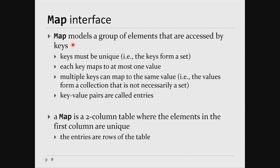A map models a group of elements accessed by keys. You can think of a list as a map where the keys are the integer indexes. A map generalizes a list in that the indexes are no longer integer numbers — in Java they can be any reference value. Keys must be unique: no two elements in a map have the same key. Every key maps to exactly one value, but multiple keys can map to the same value. So the values form some kind of collection, but the keys form a set.